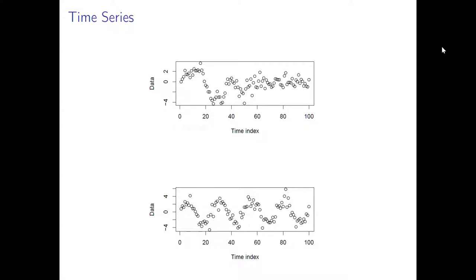We simulated two more datasets. The first one has a change point at time step 50. The first 50 data points were simulated from an AR1 model with autocorrelation coefficient 0.9, then there is a change point and for the last 50 values the coefficient decreased to 0.3. We can see that as the coefficient decreases the time series resembles more and more white noise, because when the coefficient is zero the process becomes white noise.